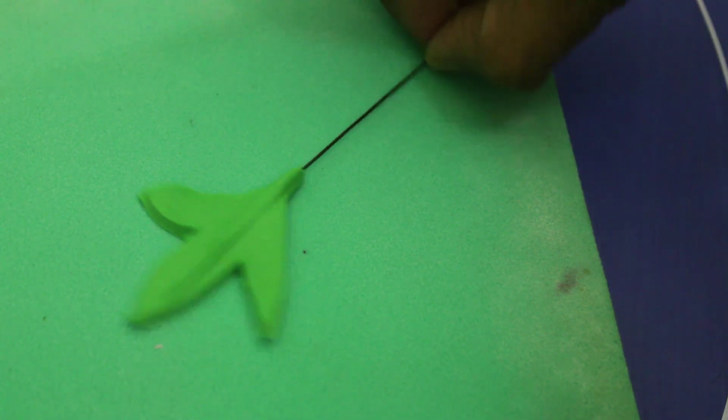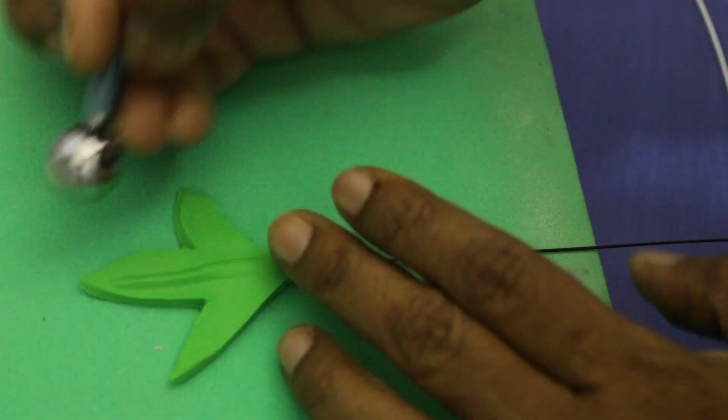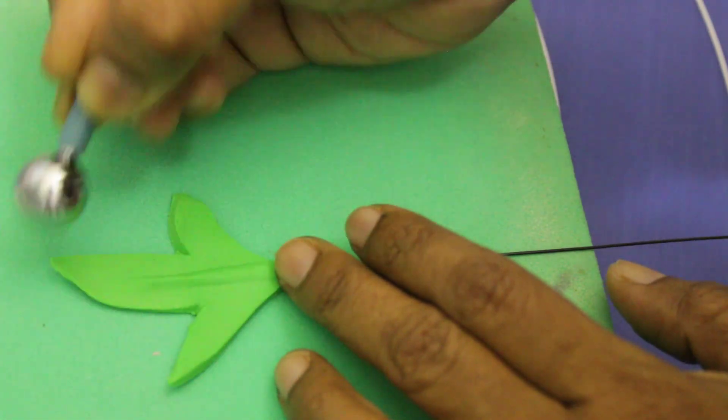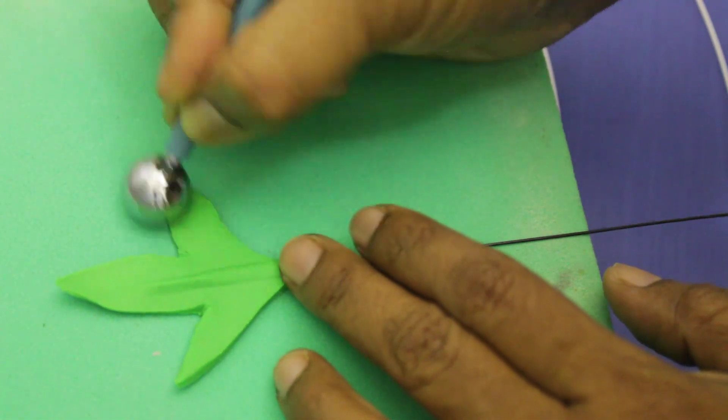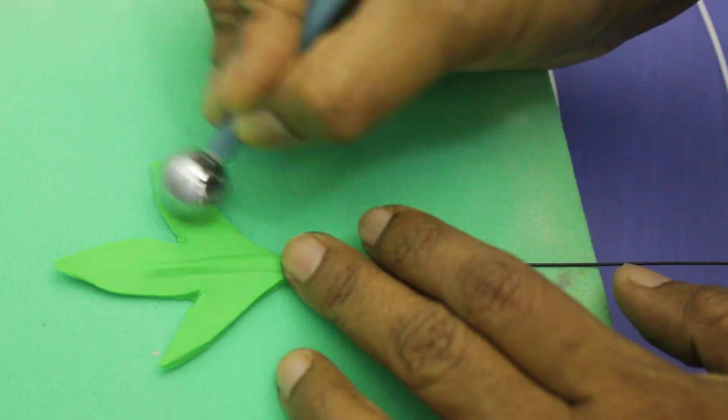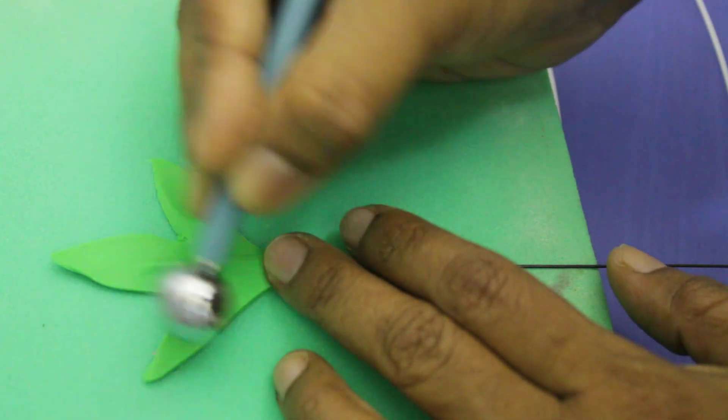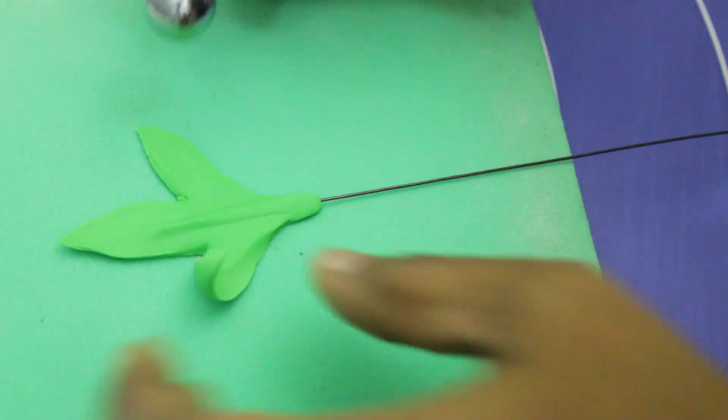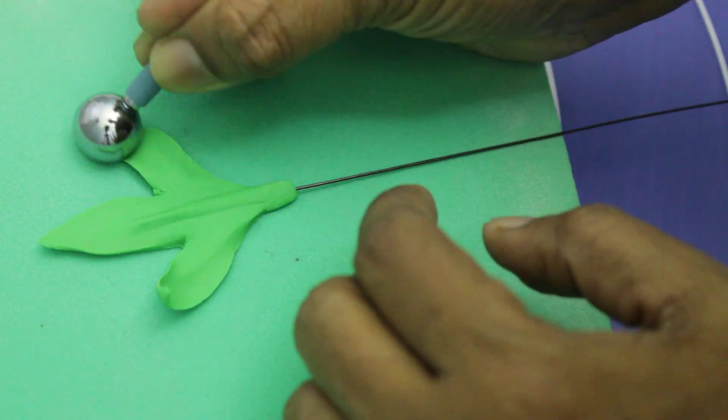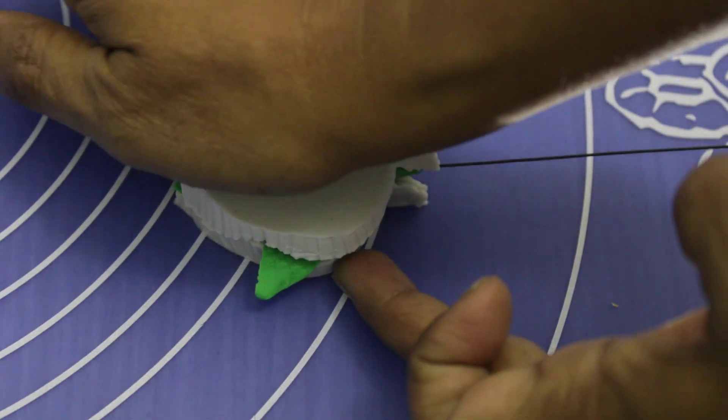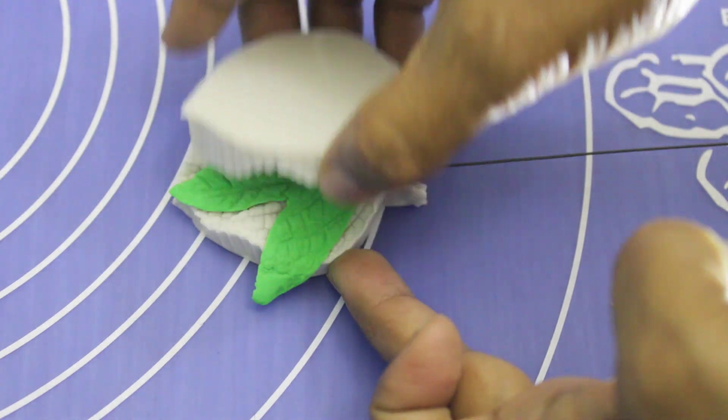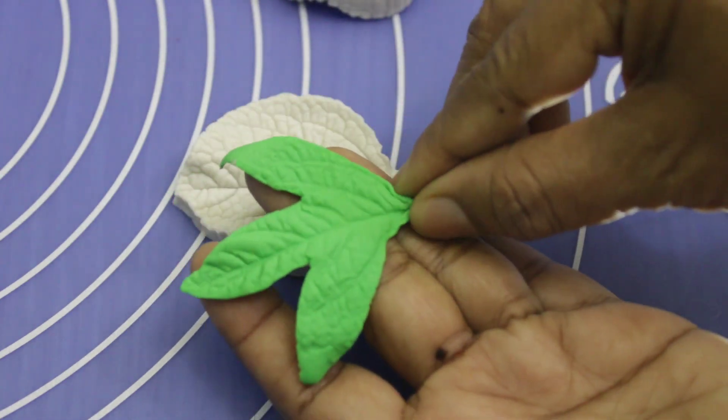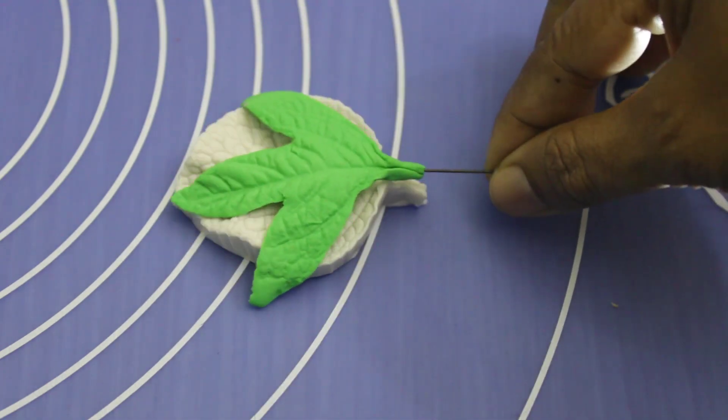Use the ball tool to make it smooth and nice. Place the leaf here and it will be like this. Keep it aside to dry.